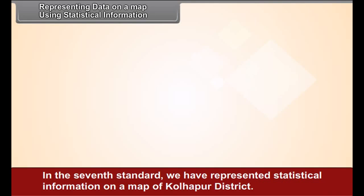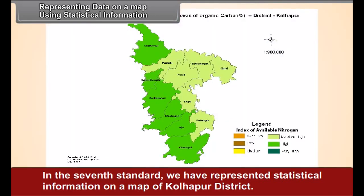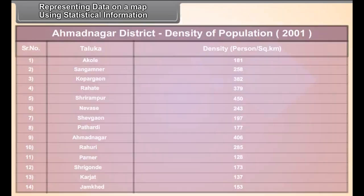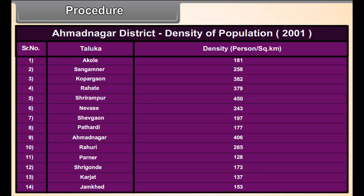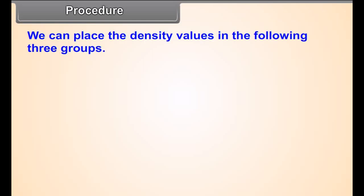Representing data on a map using statistical information. In the 7th standard, we had represented statistical information on a map of Kohlapur district. This year, we shall prepare another map. The Taluka wise density of population i.e. Census 2001 for Ahmadnagar is given in the accompanying table. You have to prepare a choropleth map using this data.